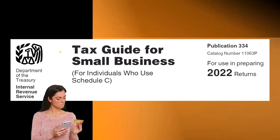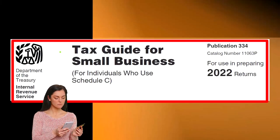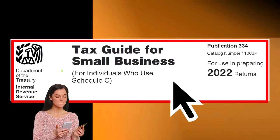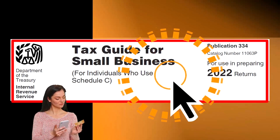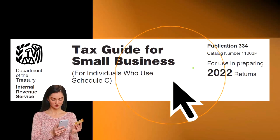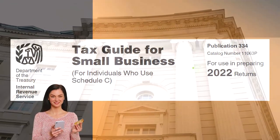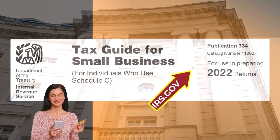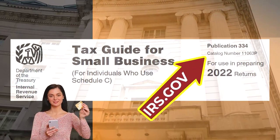Most of this information comes from the Tax Guide for Small Business for individuals who use Schedule C, Publication 334, Tax Year 2022. You can find it on the IRS website, irs.gov.